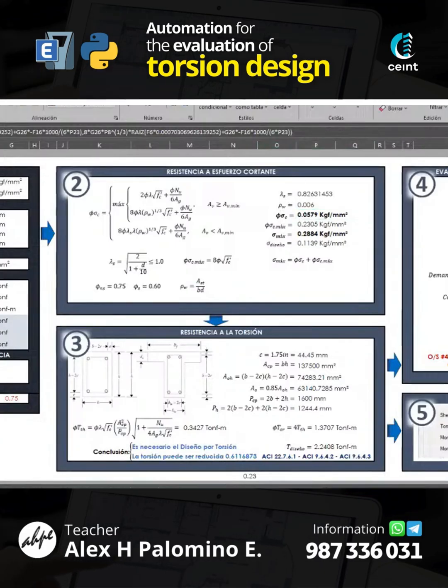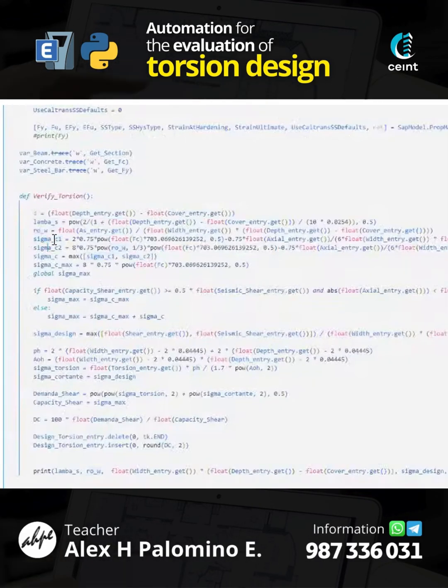Then over here I have phi_sigma_sub_c. This would be these two, both this one and the one here. Of these two you have to evaluate and take the maximum.